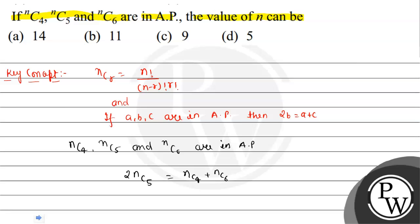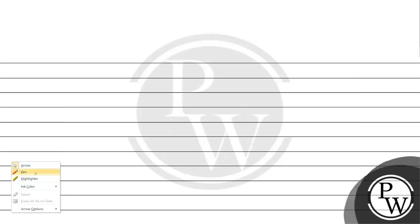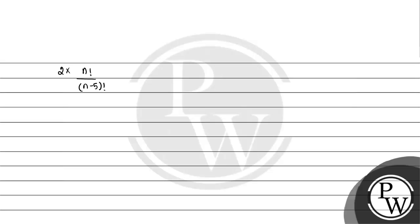Now we substitute the values of NC5, NC4, and NC6. So we have 2 into N factorial divided by (N minus 5) factorial into 5 factorial, equal to N factorial divided by 6 factorial into (N minus 6) factorial, plus N factorial divided by 4 factorial into (N minus 4) factorial.